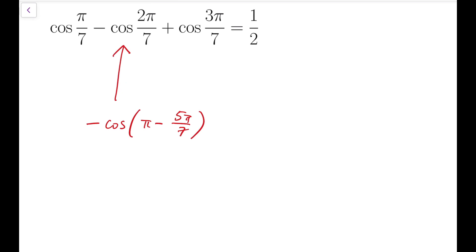Recalling that cosine of π minus some angle is equal to negative of cosine of that same number, in other words, I can say that cosine of π minus θ equals minus cosine θ. So this term would be equal to minus of minus cosine 5π over 7, which means it's equal to plus cosine 5π over 7.